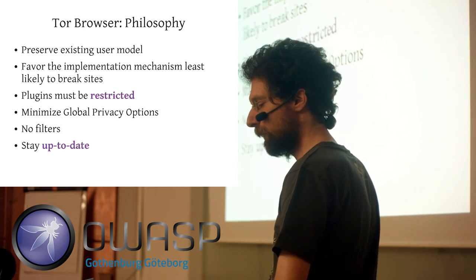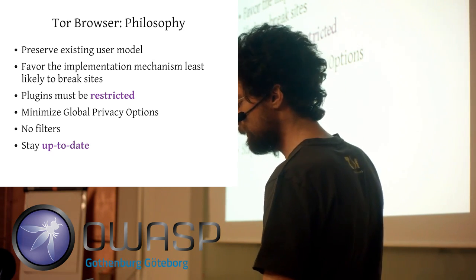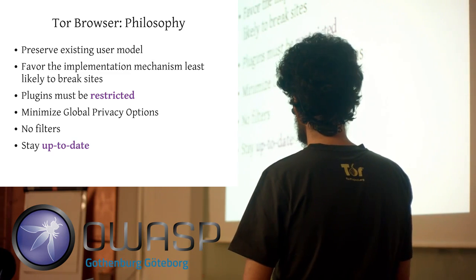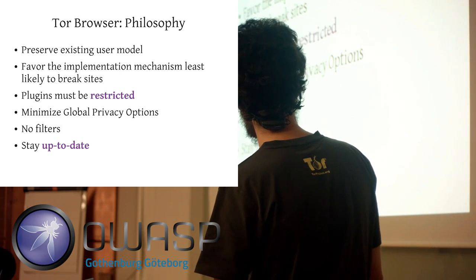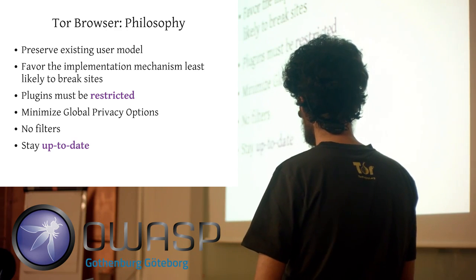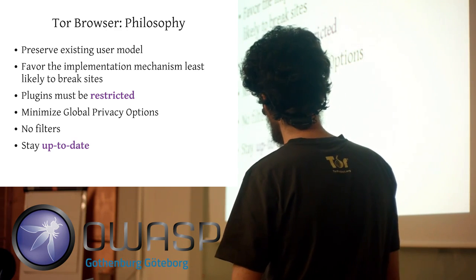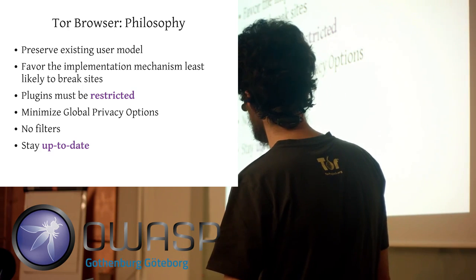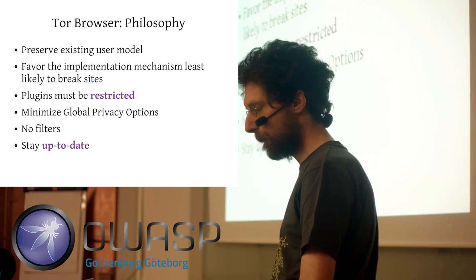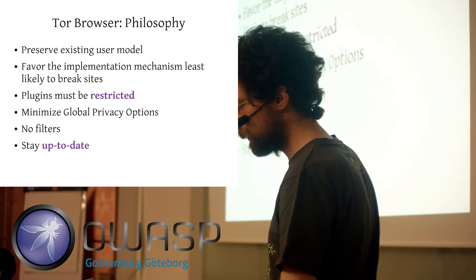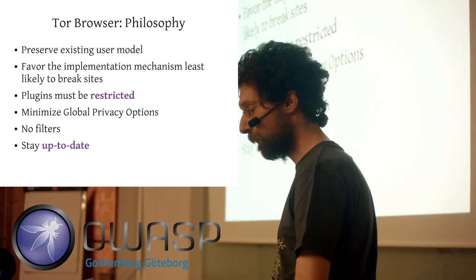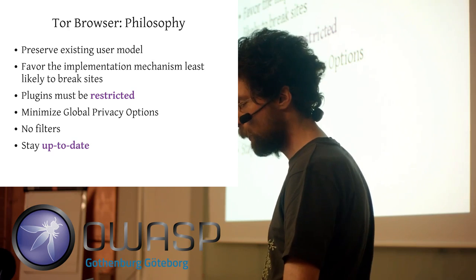What we want to do is preserve the existing user model. This is one really important point, because Tor Button is one of its obvious failures in preserving the existing user model.